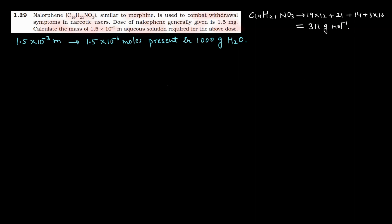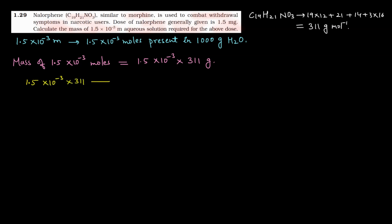Now, what we need to calculate is the mass of solution in which a 1.5 mg dose is ready. So we find the mass of 1.5 × 10⁻³ moles of Nalorphine, which equals 1.5 × 10⁻³ moles × 311 g/mol. This is the number of moles multiplied by the molar mass of 311 grams. We keep it in this form for now without calculating.